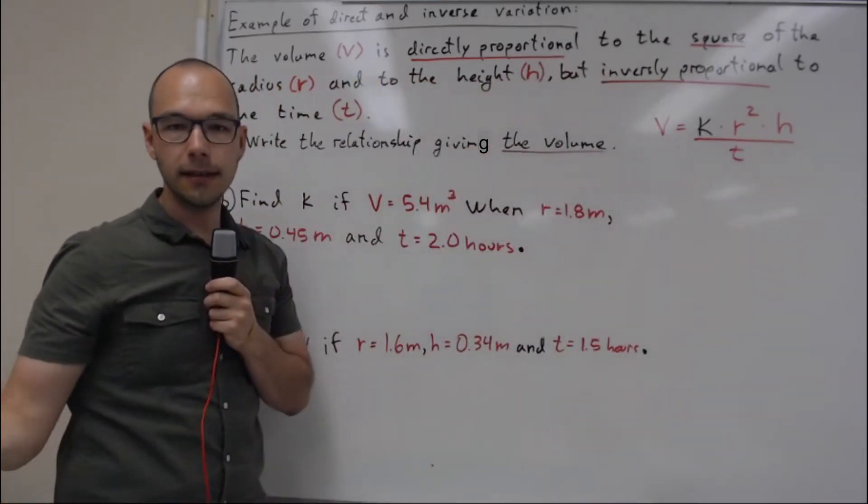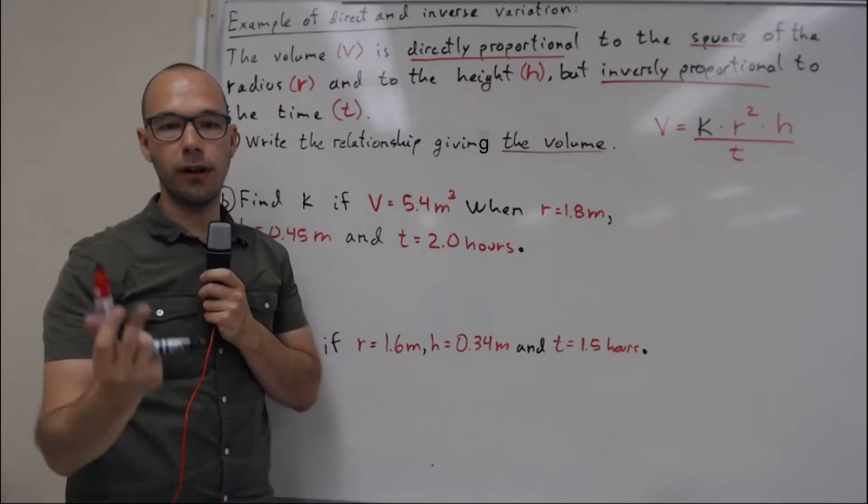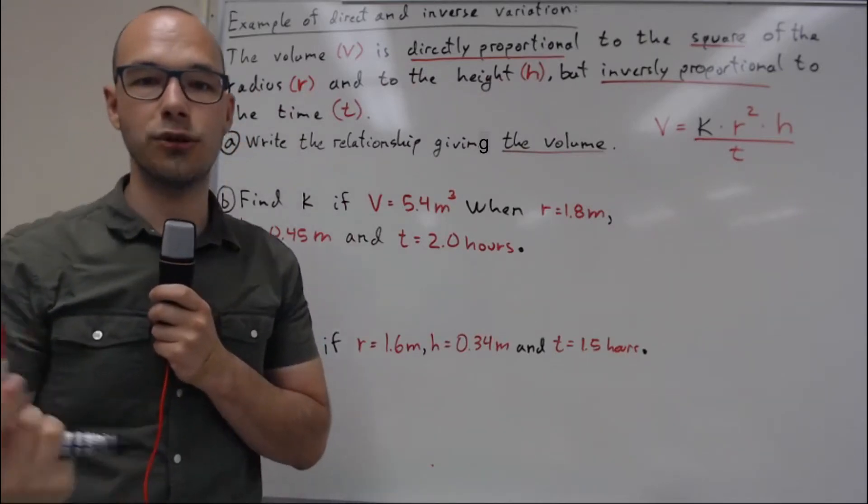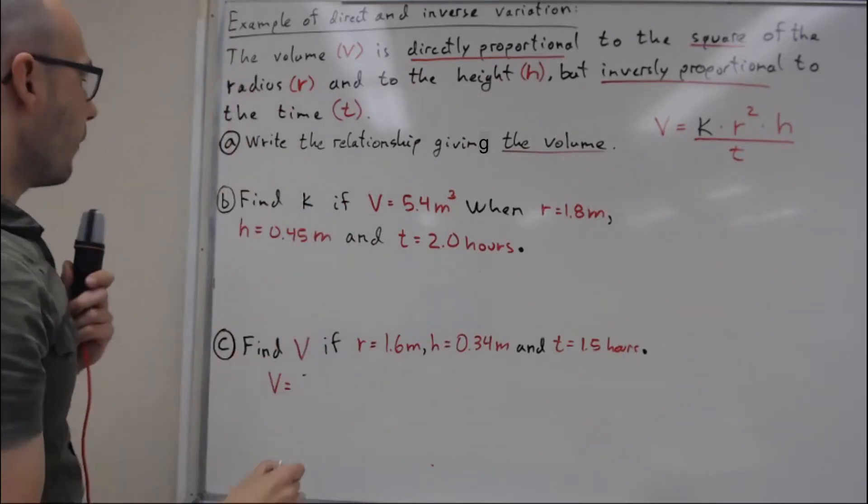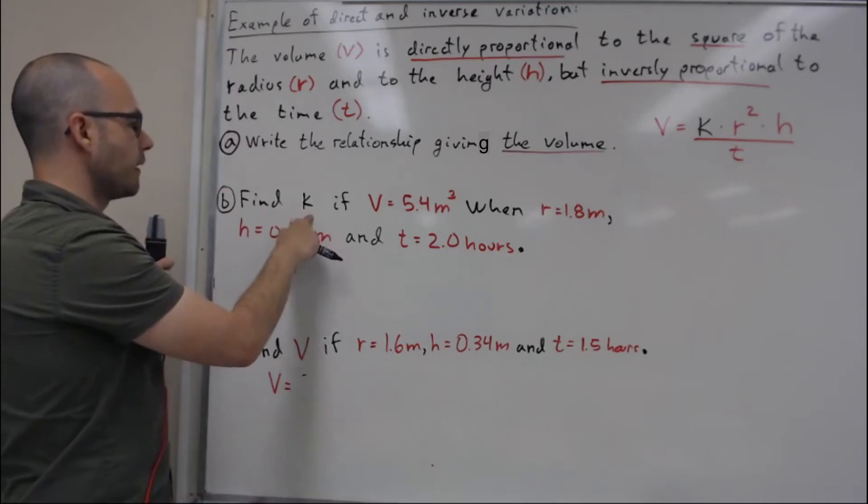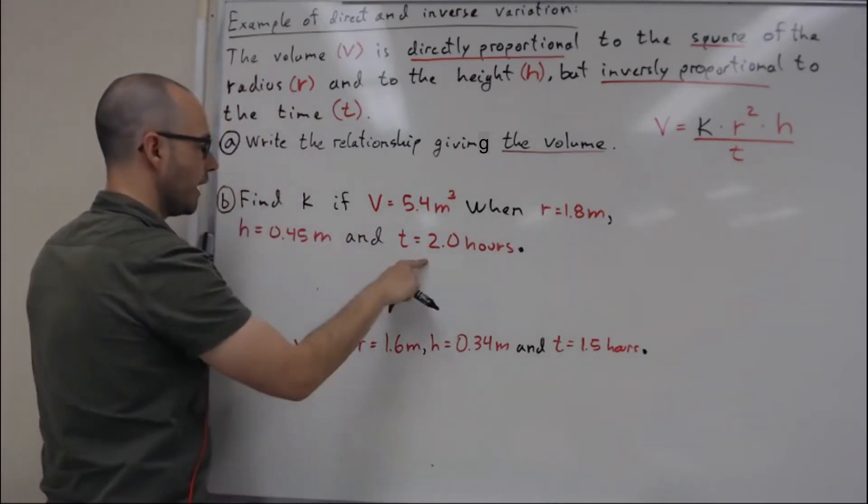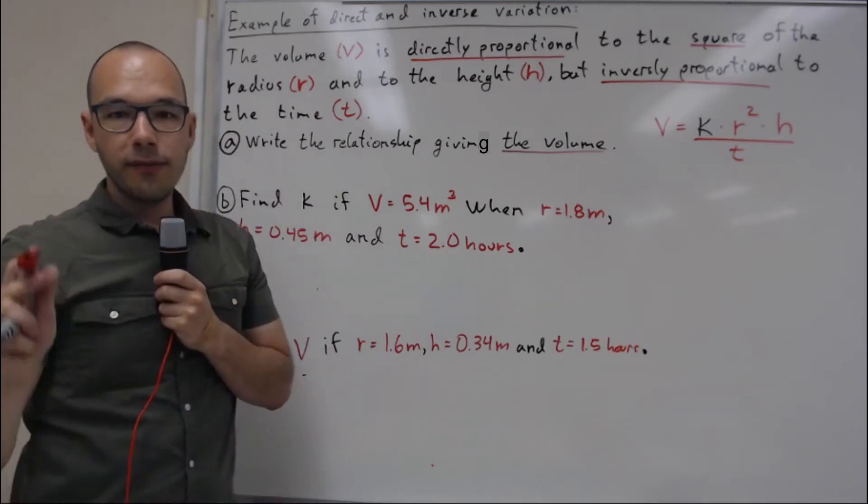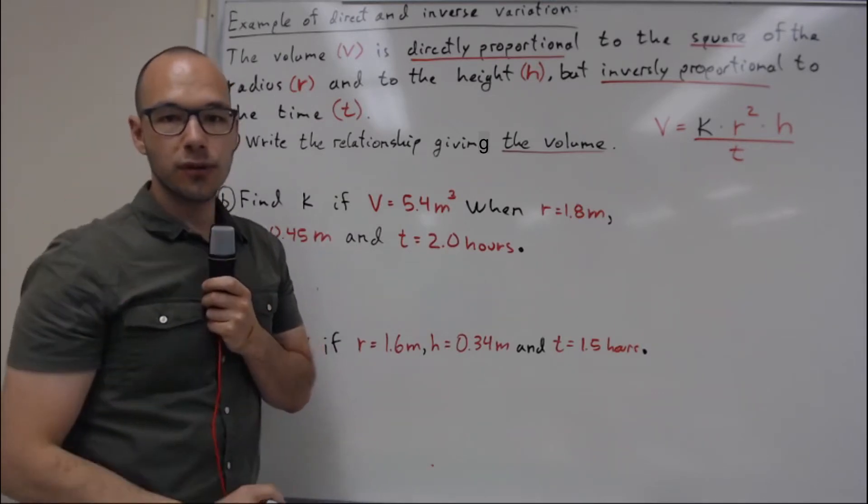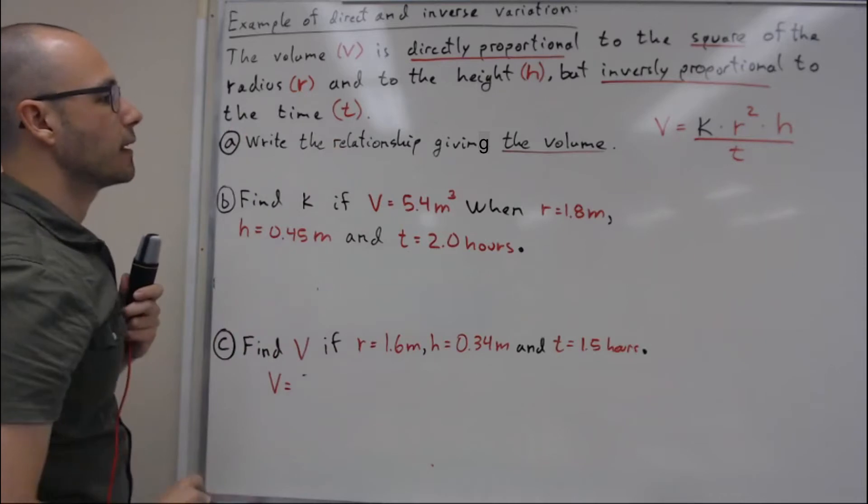Now I have to find k if I have some values for V, r, h, and t. So we have experimental values and we have to calculate k.